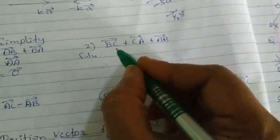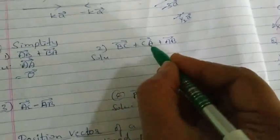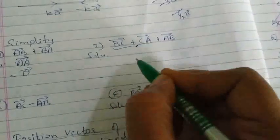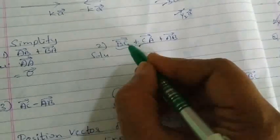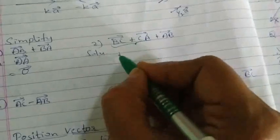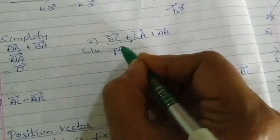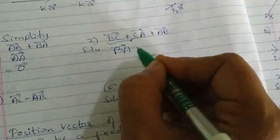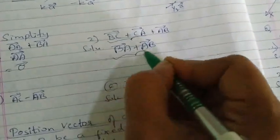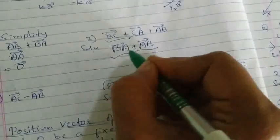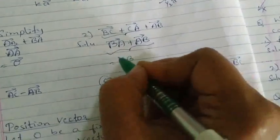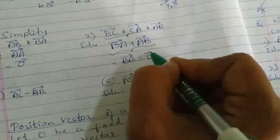Solution for the second question: BC vector plus CA vector plus AB vector. BC plus CA will be first considered. By the triangle law of vector addition, C remains the same, so we are left with BA vector. BA vector plus AB vector — now AA remains the same. Therefore the result is BB vector, which is the null vector.